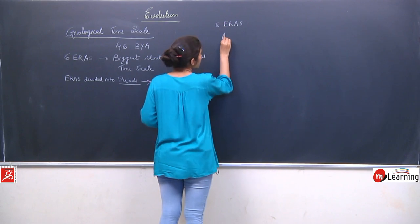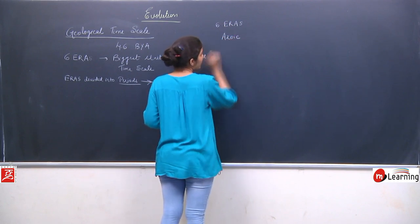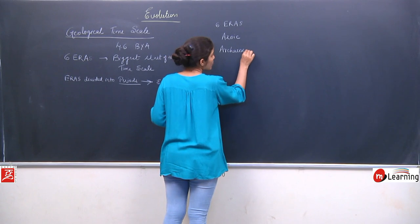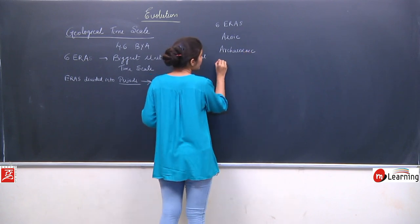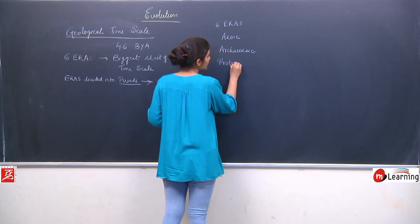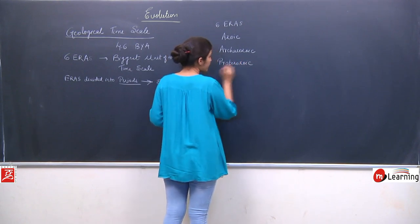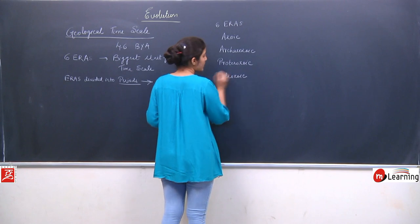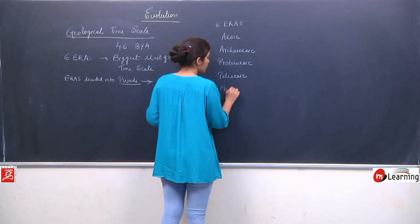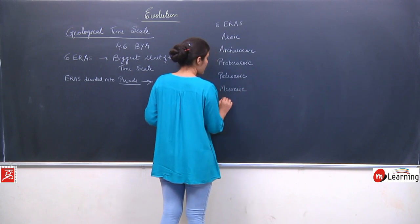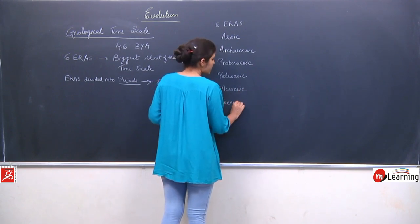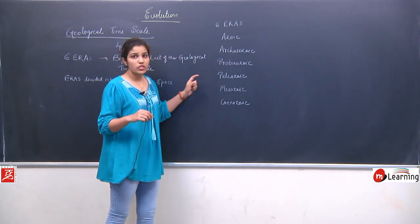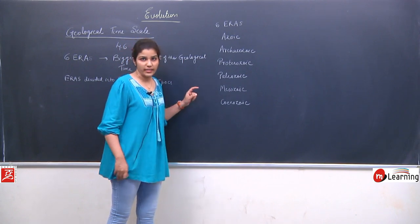The first was the Azoic era, the second was the Archaeozoic era, third was the Proterozoic era, fourth was the Paleozoic era, fifth was the Mesozoic era, and sixth was the Cenozoic era. These are the 6 eras into which the earth's history has been divided.